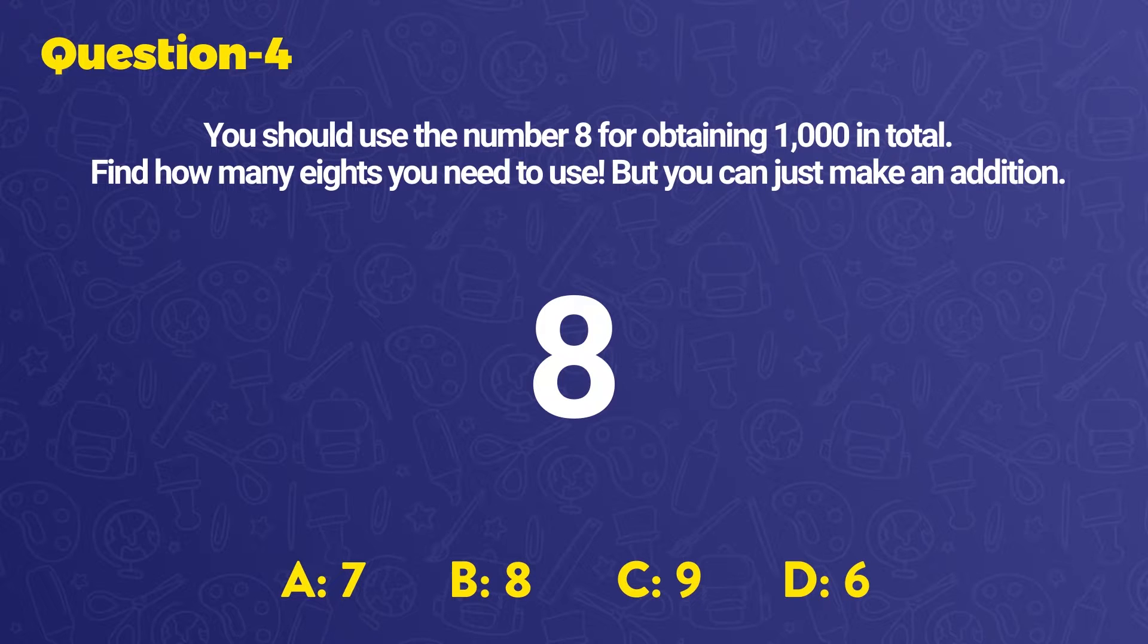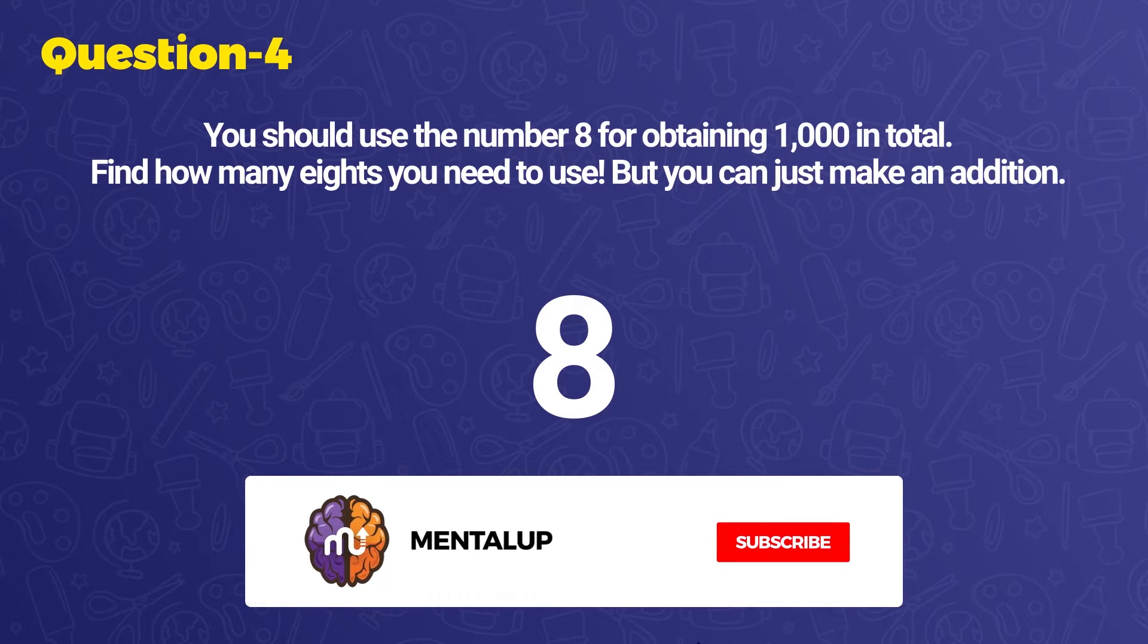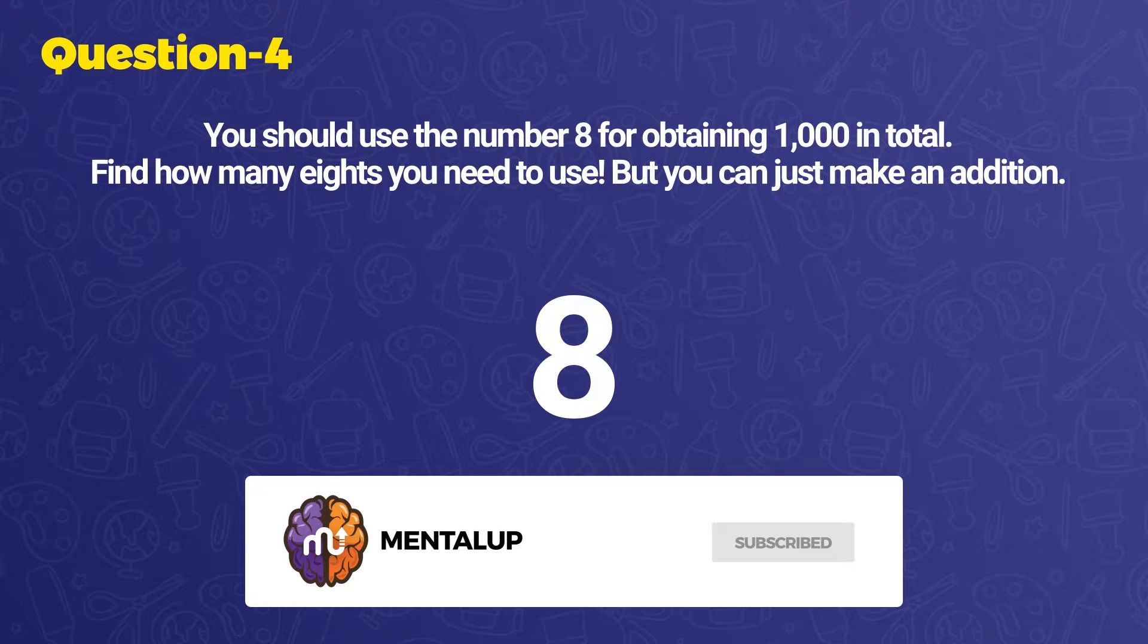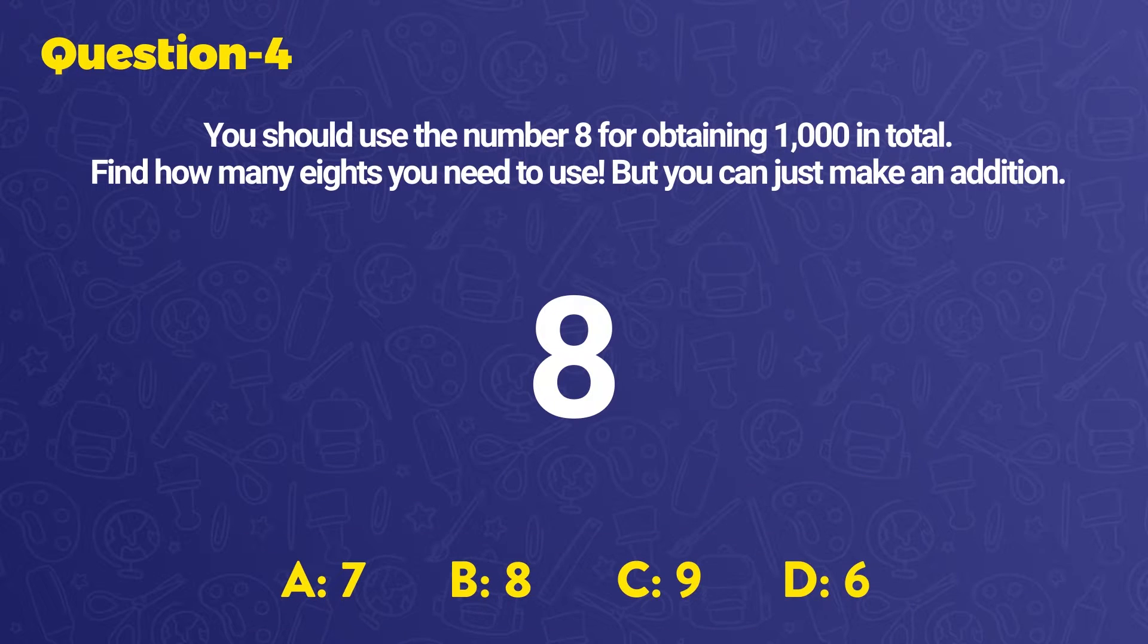We'll explain it to you, but first, don't forget to like our video and subscribe to the channel for solving more boosting and entertaining math riddles. When we look at our question, we could be confused because the number given has too low a value to obtain 1000 in total. However, using logic, we can see that it isn't impossible.